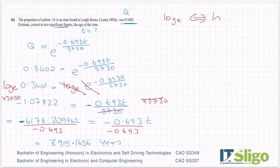Quite a lot of years. And then it says estimate correct to two significant figures, so not two decimal places, two significant figures.